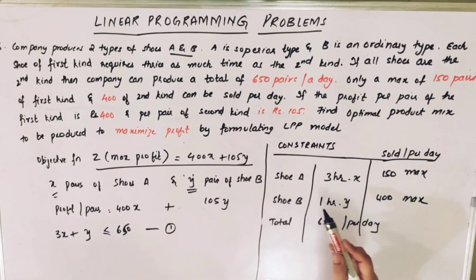The second constraint is, only 150 pairs of shoes can be sold per day at the max. So it's either less than or equal to 150. The second constraint is X less than or equal to 150. What is the third constraint? Y can be less than or equal to 400 because it's max. If you say max, that means it should be less than or equal to. And this is the third constraint.